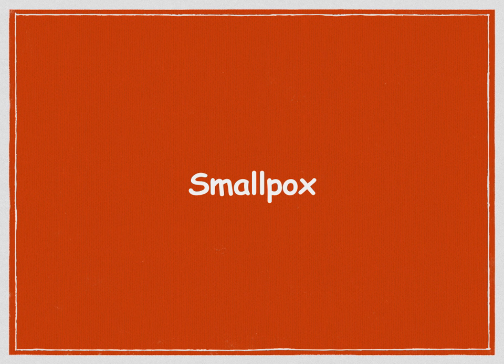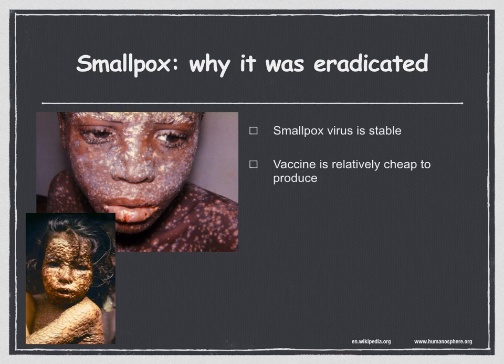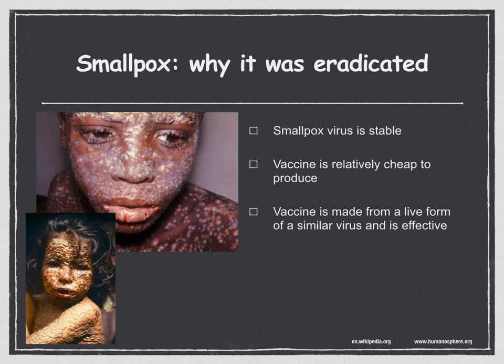Let's look at smallpox — why was it eradicated? The first ever vaccinations were carried out by Edward Jenner in 1796 against smallpox, and the disease was first eradicated from the world by the same process in 1977. Reasons include: the variola virus is genetically stable, so it does not mutate or change its antigens, meaning the vaccine was always effective and the same vaccine could be used anywhere across the globe. The smallpox vaccine is relatively cheap, easily produced, and made from a live form of a similar virus.